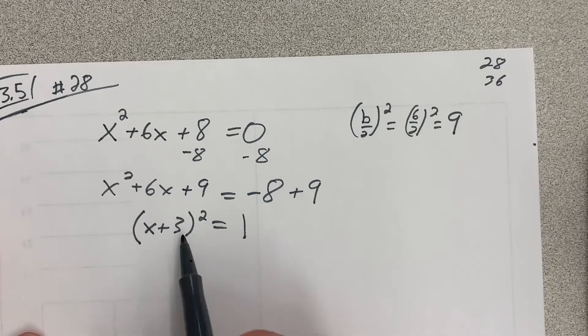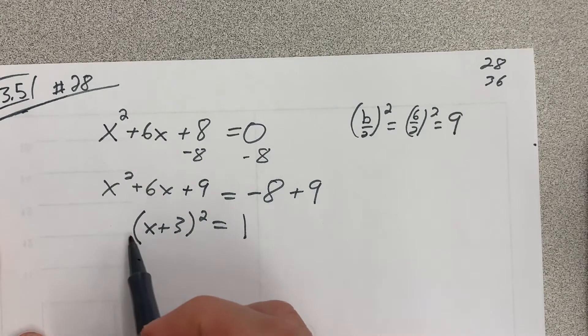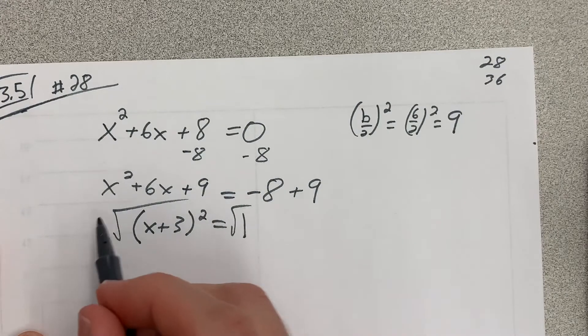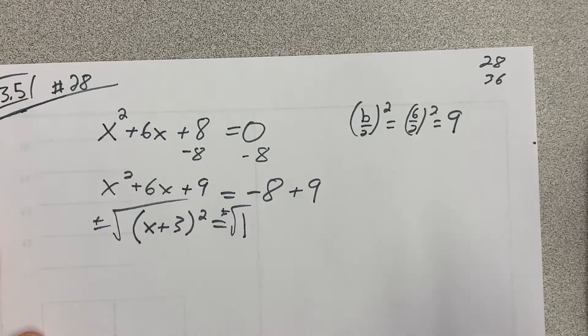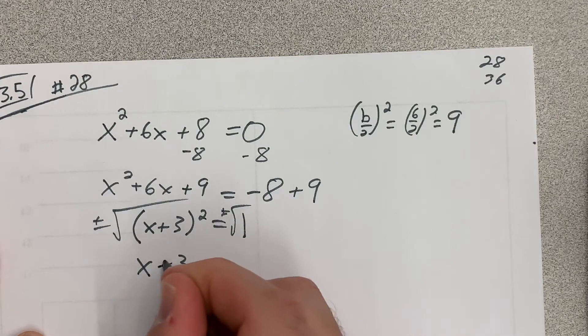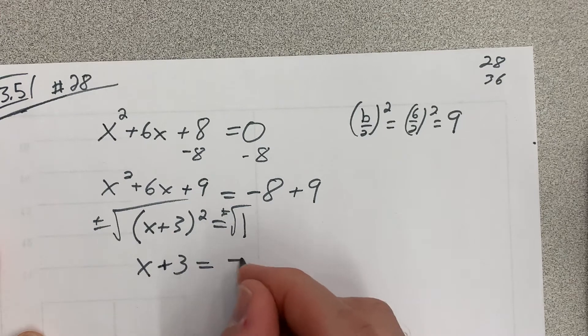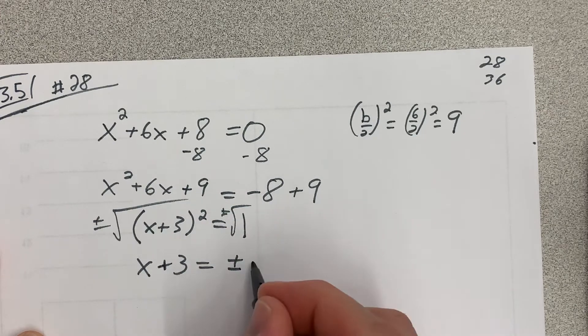So then, what's nice about this is now I can use the square root property. So I can just go square root of the left, square root of the right, plus or minus, because it's a variable. And then I'm going to get x plus 3 on the left-hand side. And on the right, I'll get plus or minus the square root of 1. Well, that's just plus or minus 1.